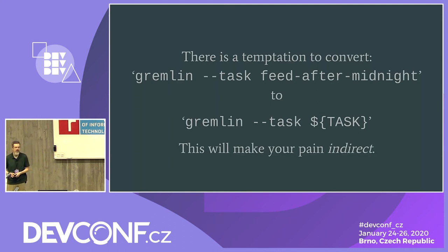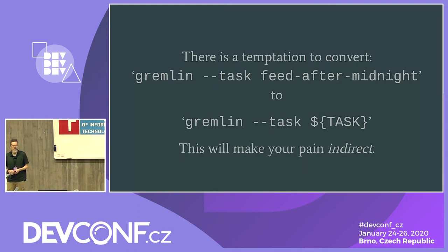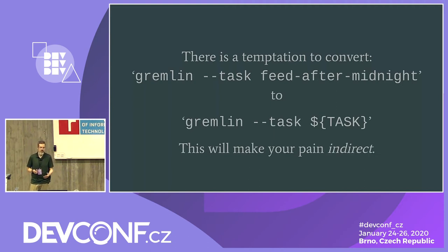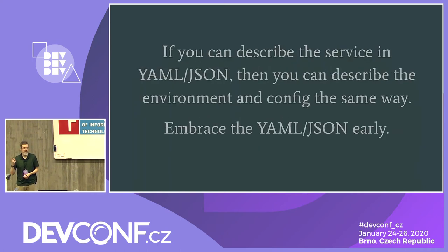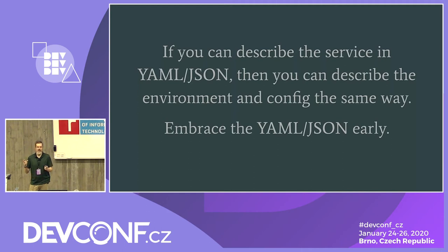There's a strong temptation when writing code to turn your options into parameters, but all you're doing is creating indirect pain — you end up defining the variable in multiple places: in the actual code, in the representation, in your template. Instead, when you change the environment, switch it over at the same time. If you can describe your service in JSON and YAML to get it into Kubernetes, you should probably do the same with your environment. Embrace the JSON and YAML early, and teach your service how to use it.